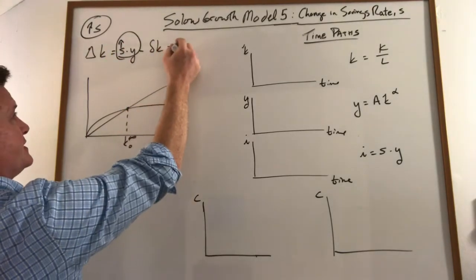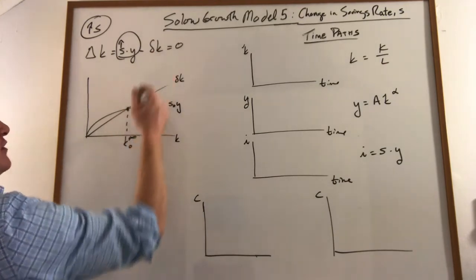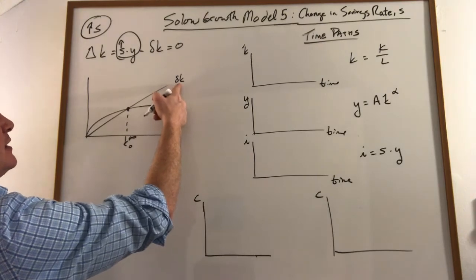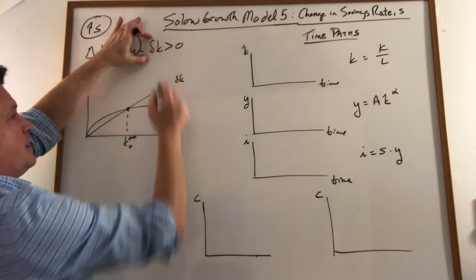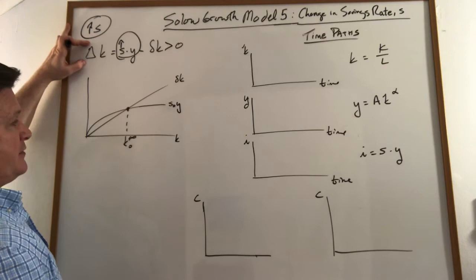So if we were initially in steady state, which is here, right where investment is just offsetting our depreciation, now we're investing more than our depreciation and so capital accumulation turns positive and we begin to increase our capital stock.